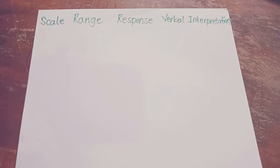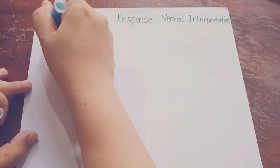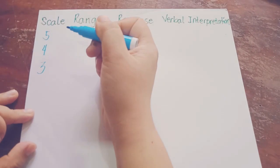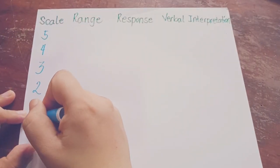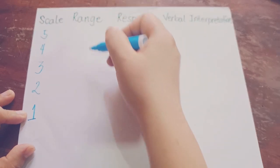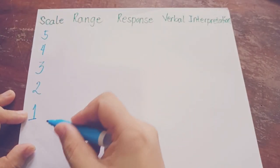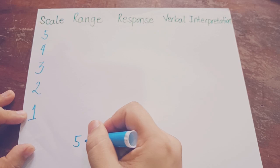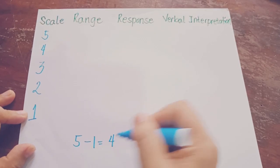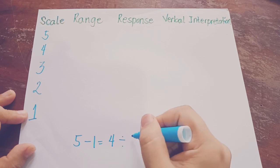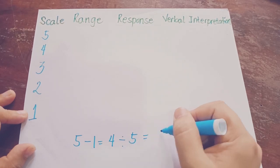In this concrete example, we will use a 5-point Likert scale. For the scale, we write 5, 4, 3, 2, and 1 as the lowest point. To compute the range, subtract the lowest point scale from the highest point scale: 5 minus 1 equals 4, then divide by the total number of points on the scale, which is 5. The answer is 0.80.